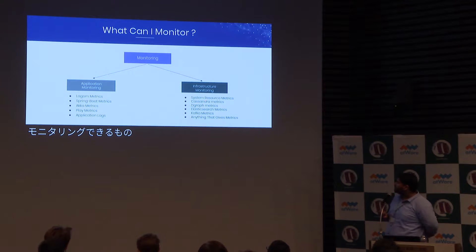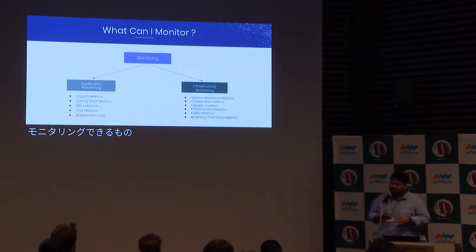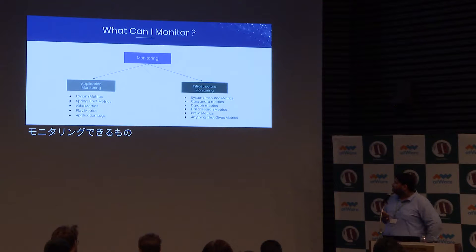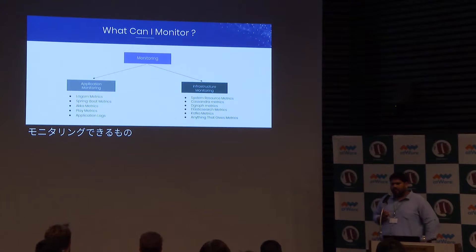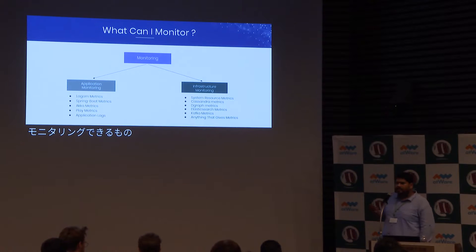The other branch is infrastructure monitoring — apart from system monitoring, this covers monitoring of components like Kafka, Cassandra, DGraph, and Elasticsearch. For Elasticsearch, it tells you how many shards and nodes are in the cluster, and applies alerts if something goes wrong. Similarly for Kafka, the metrics include current offset and number of brokers. These are the basic monitoring components we capture.